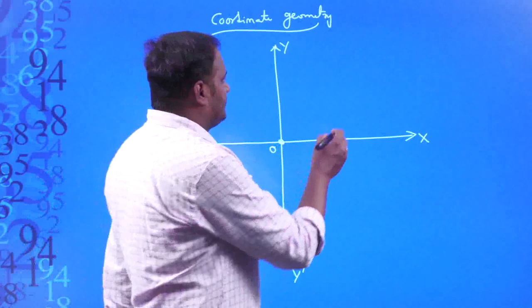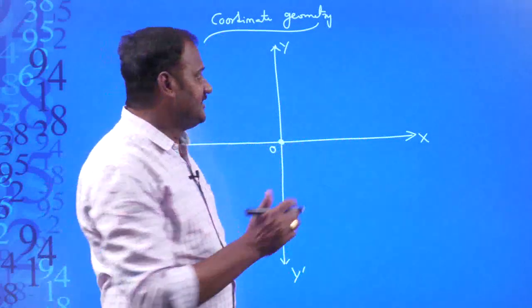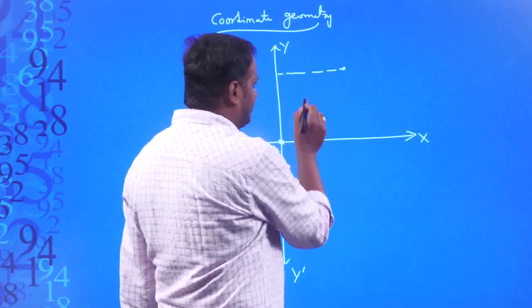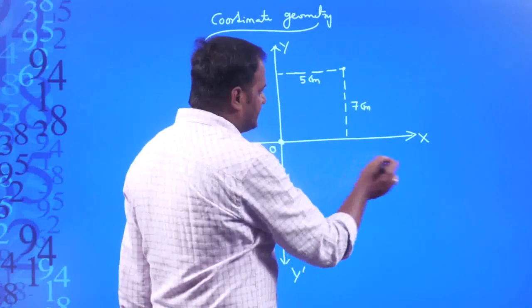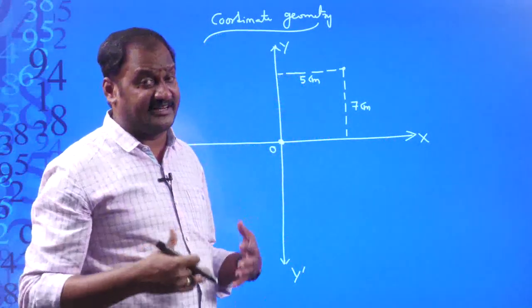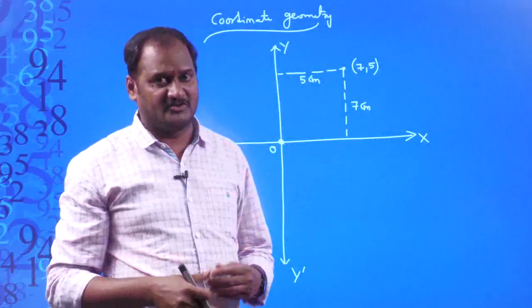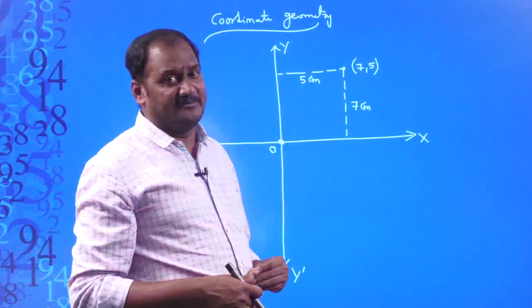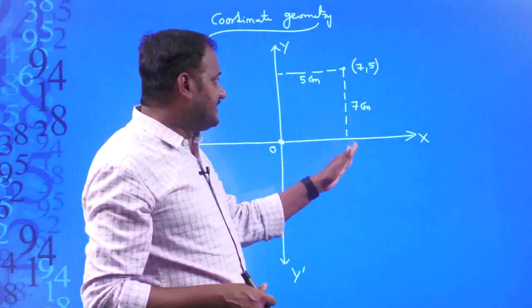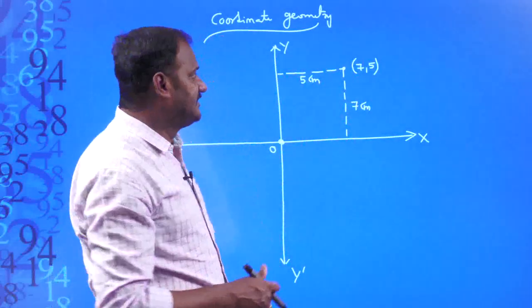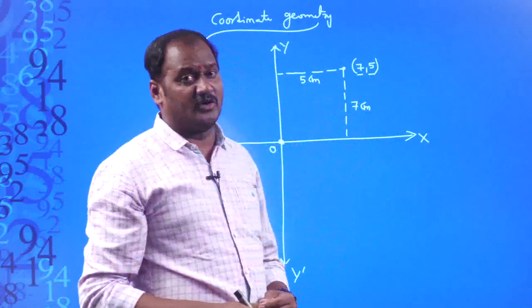For example, this is where I am living. I just told my friend: come to my place, which is exactly at some 7 centimeters distance from the horizontal reference and 5 centimeters distance from the vertical reference. So what exactly is my point? My point is (7, 5). So my position is at (7, 5). The place is at 5 meters distance from the vertical reference and 7 centimeters distance from the horizontal reference. These (7, 5) are said to be the coordinates of that particular location.